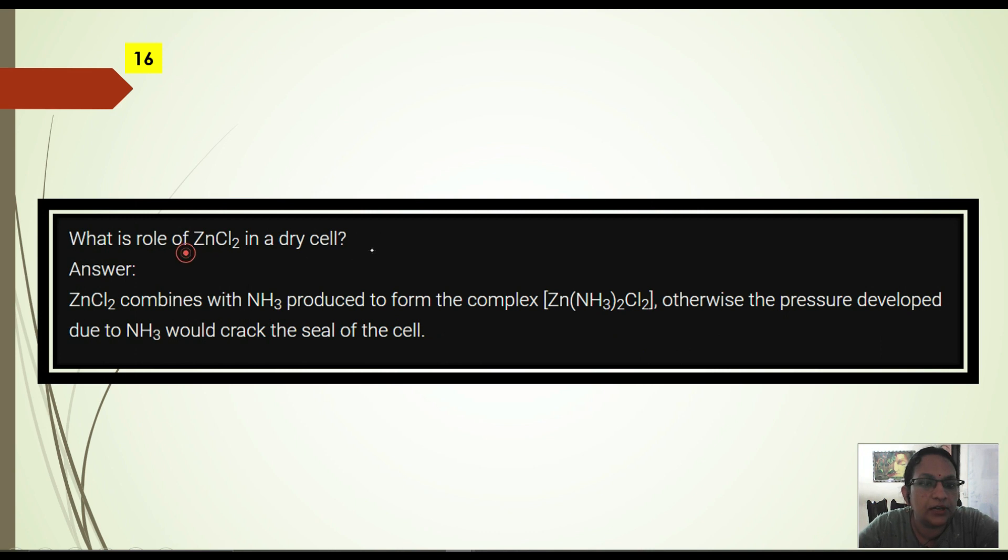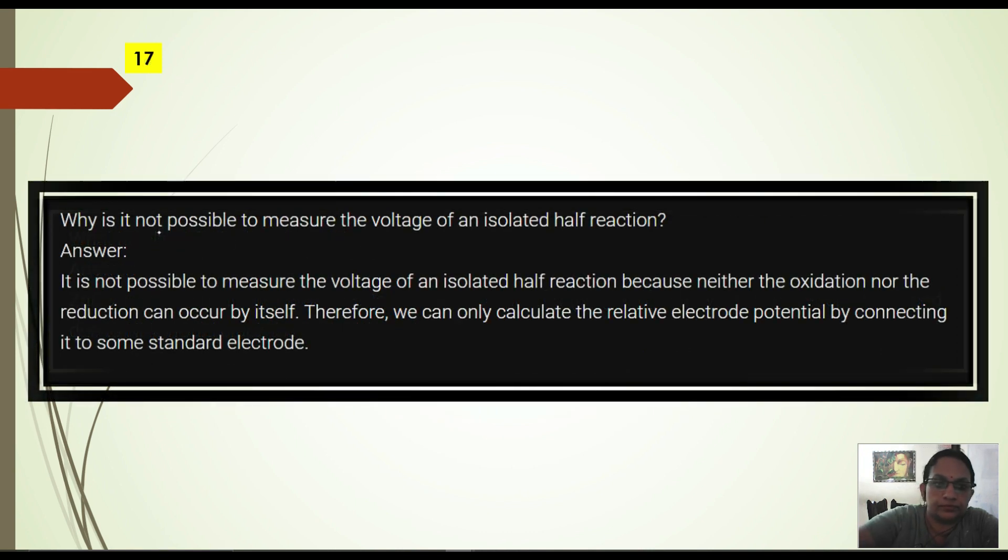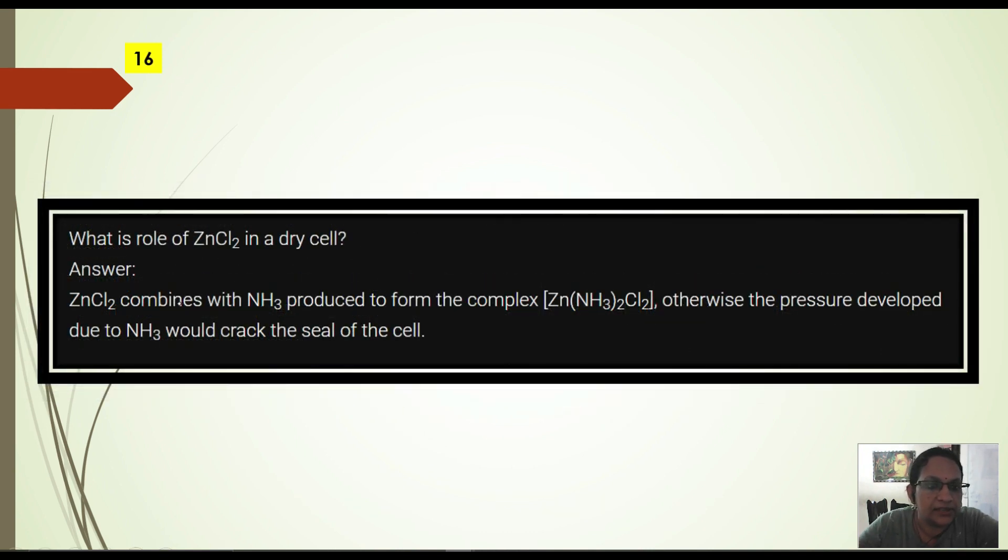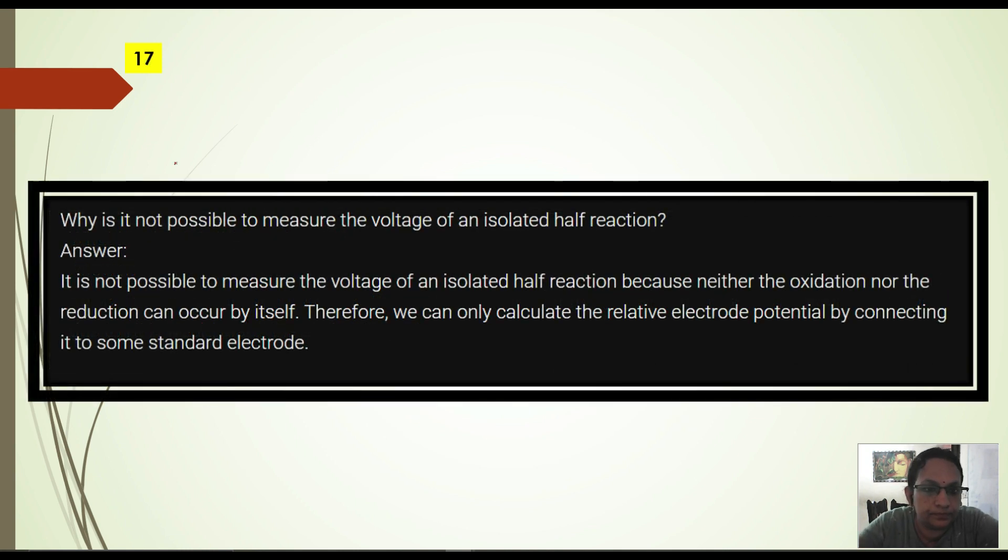Role of ZnCl2 in dry cell. ZnCl2 combines with ammonia produced to form complex Zn(NH3)2Cl2. Otherwise the pressure developed due to ammonia would crack the seal. That is why it remains in combined form.